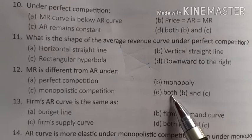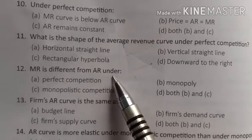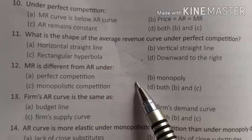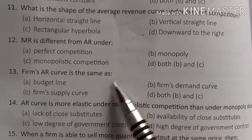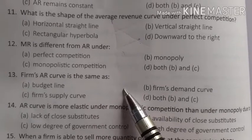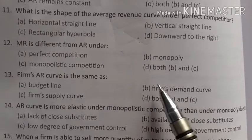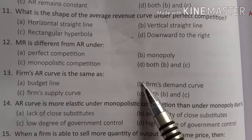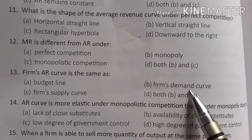In monopoly and monopolistic competition, both AR and MR are downward sloping and MR lies below AR. Firm average revenue is the same as the firm's demand curve — option B — because price determines the demand for goods.